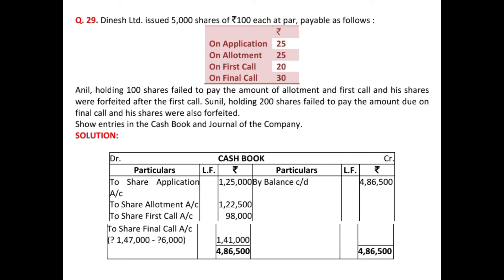Sunil, holding 200 shares, failed to pay the amount due on the final call — 30 rupees on 200 shares — and his shares were also forfeited after the final call. We need journal entries and cash book entries. When preparing the cash book, receiving entries are directly posted there; we only pass entries for arrears due, forfeiture, etc. in the journal.